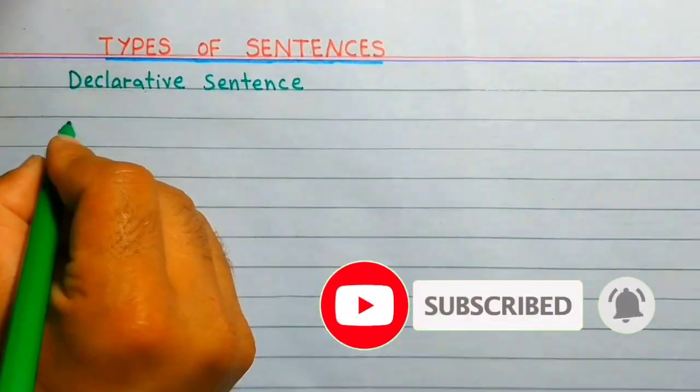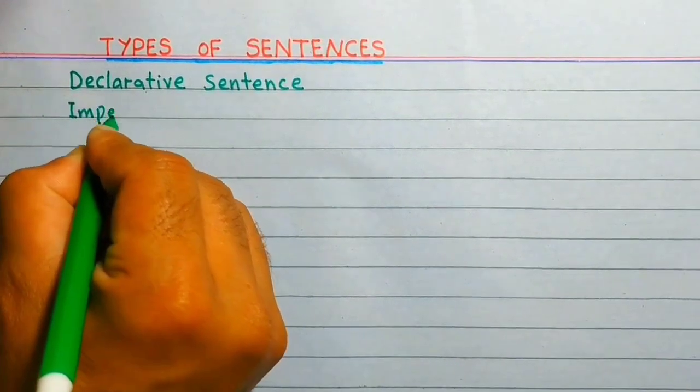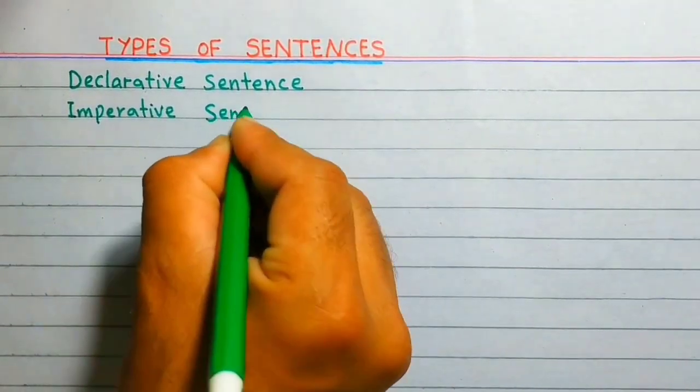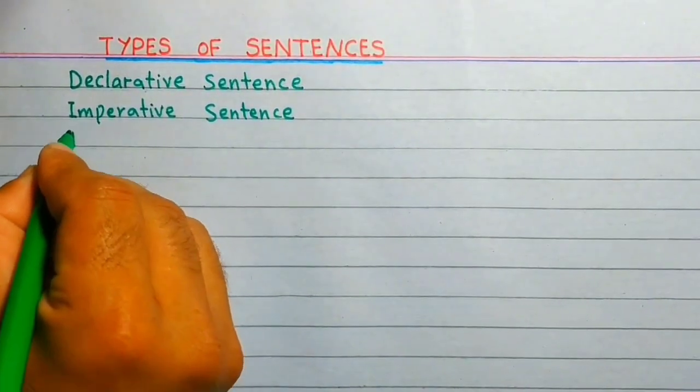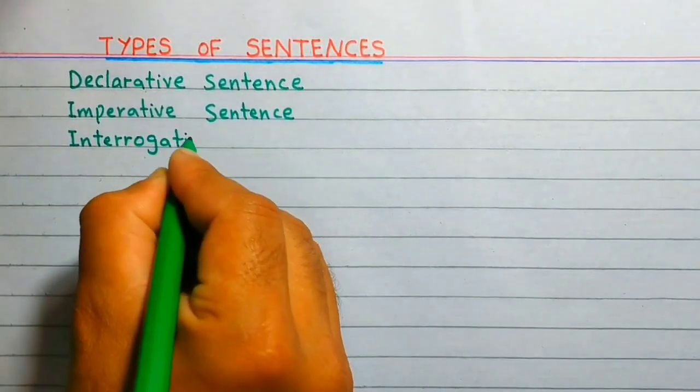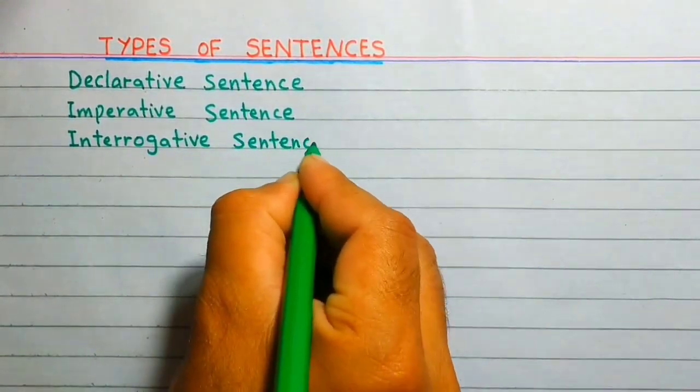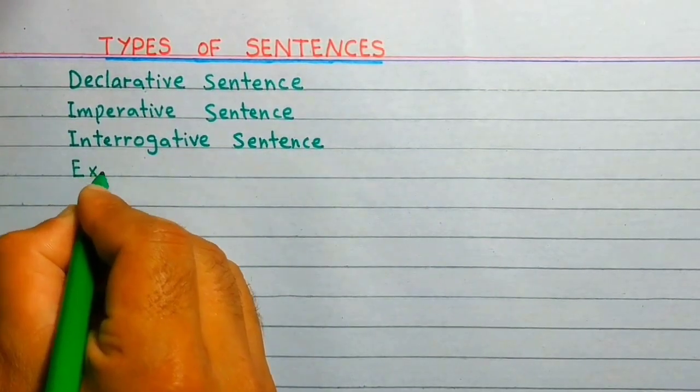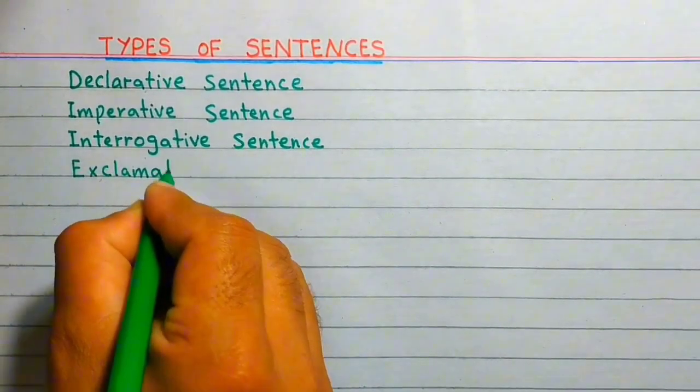First one is declarative sentence, imperative sentence, interrogative sentence, exclamatory sentence.